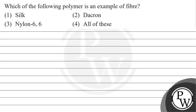Let's read this question. The question says: which of the following polymer is an example of fiber? Option one: silk. Option two: Dacron. Option three: nylon 6,6. Option four: all of these.